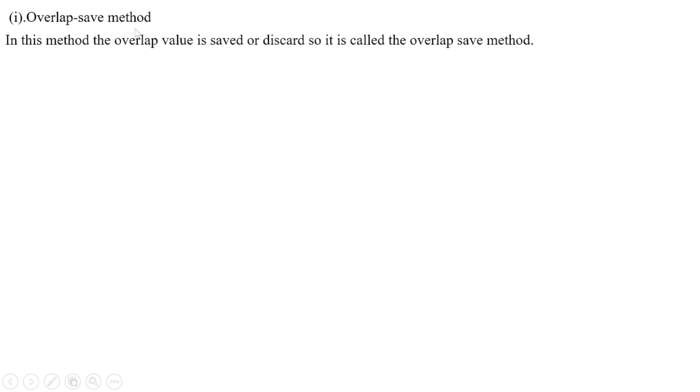In this method, the overlap value is saved or discarded, so it is called the overlap-save method.